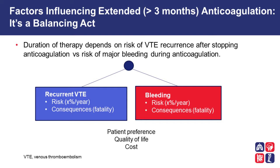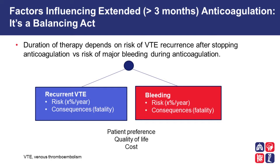The factors that come into play for extending therapy beyond the mandated initial three months are based on understanding the risk of recurrence of venous thromboembolism versus the risk of bleeding on an anticoagulant. It depends on determining for your patient where the balance lies, while also ascertaining patient preference — whether they want to continue with anticoagulation, understanding the risks and benefits, and considering their lifestyle, for example patients involved in high-impact sports where bleeding risk may outweigh recurrence risk.